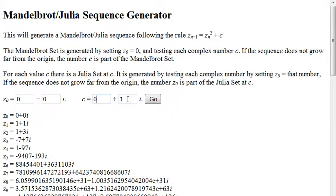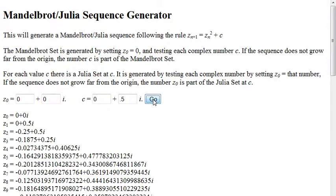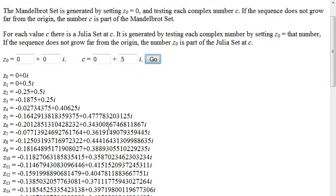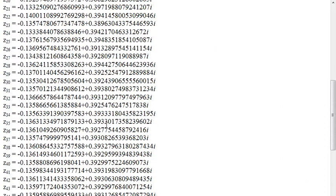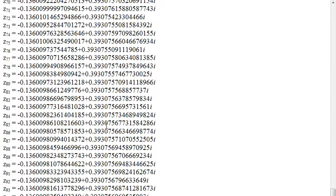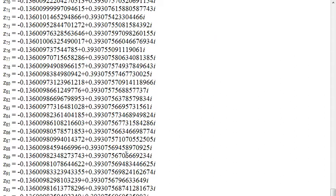Let's try another value. We tried 0 plus 0.5i. And if we compute that one, we had guessed that it looked like it was staying relatively small. And if we scroll down, we see that it is in fact staying relatively small. And so this one would be called a fixed point or a converging point.